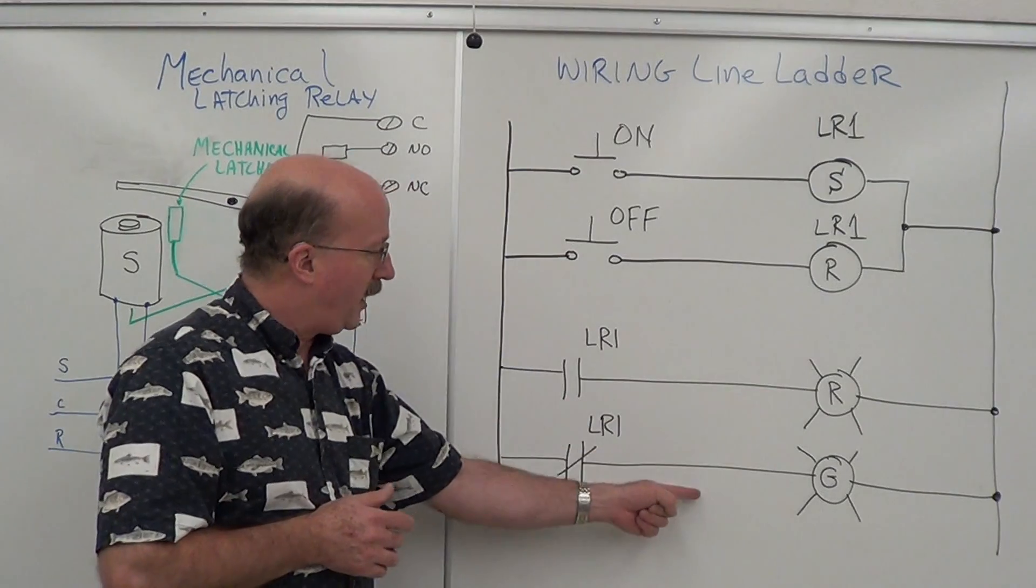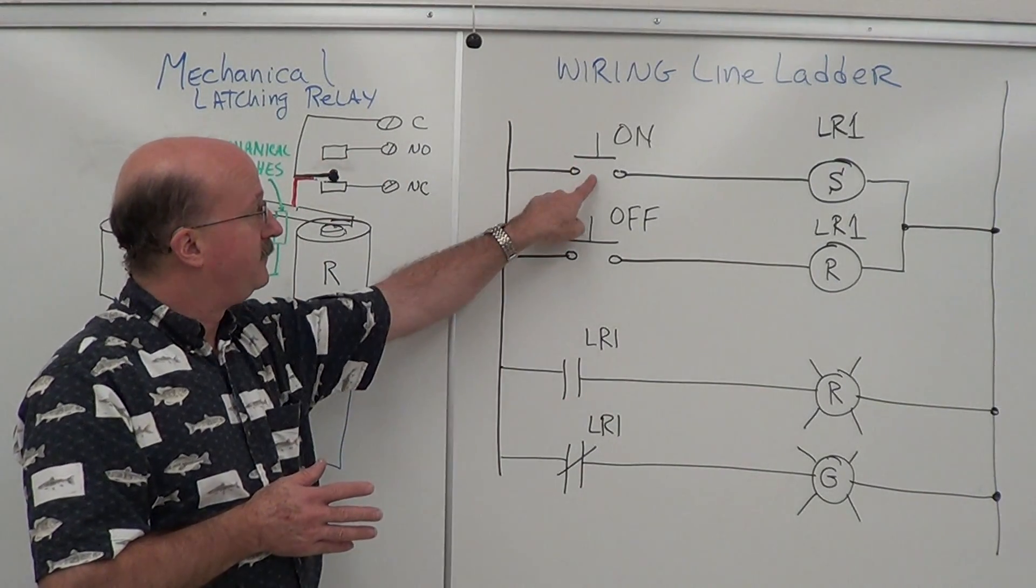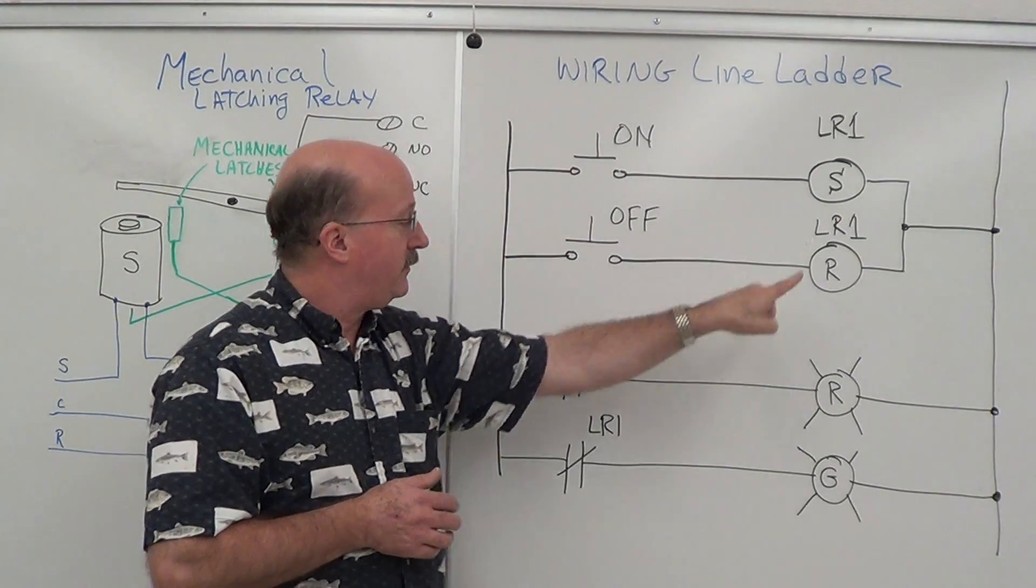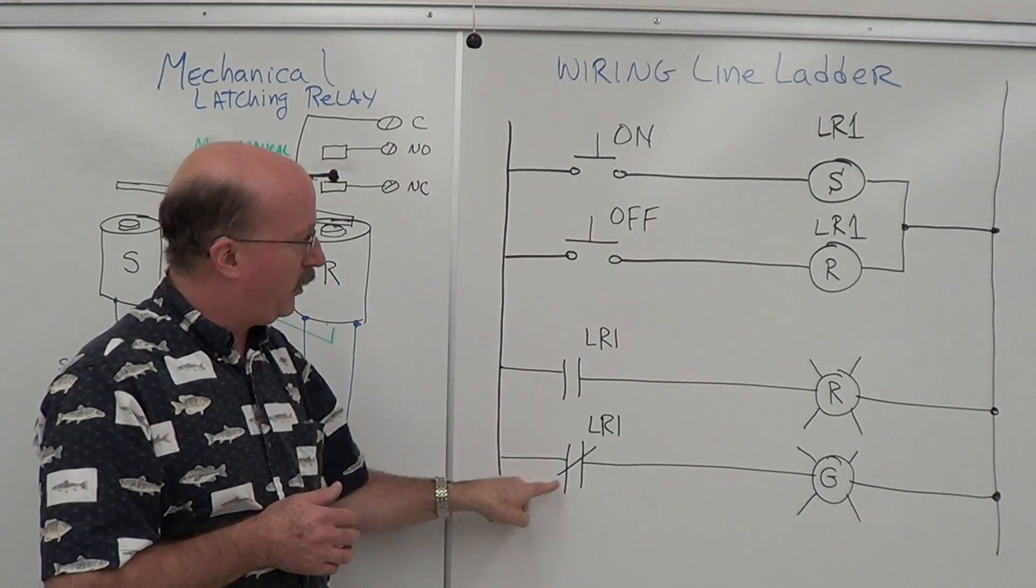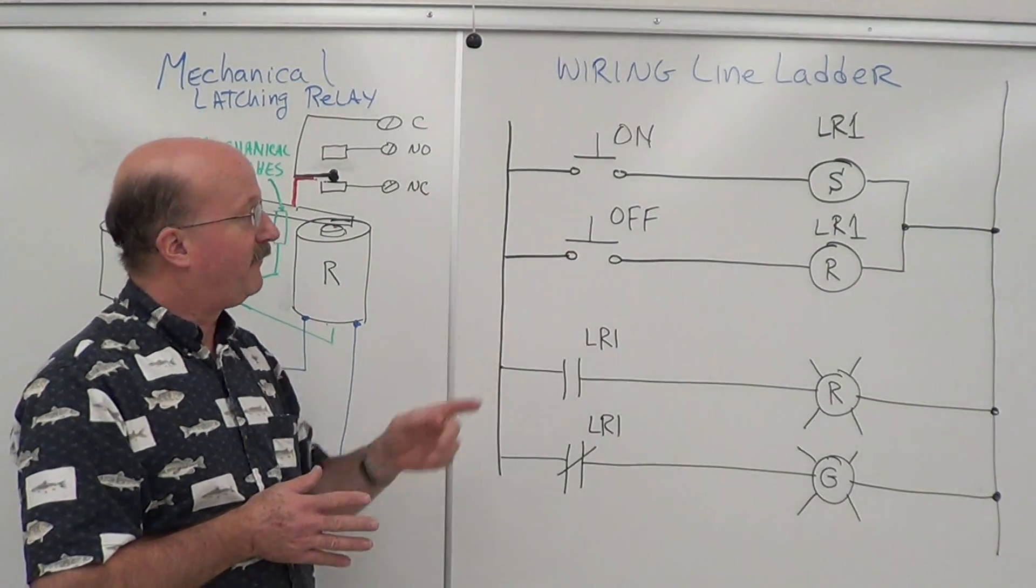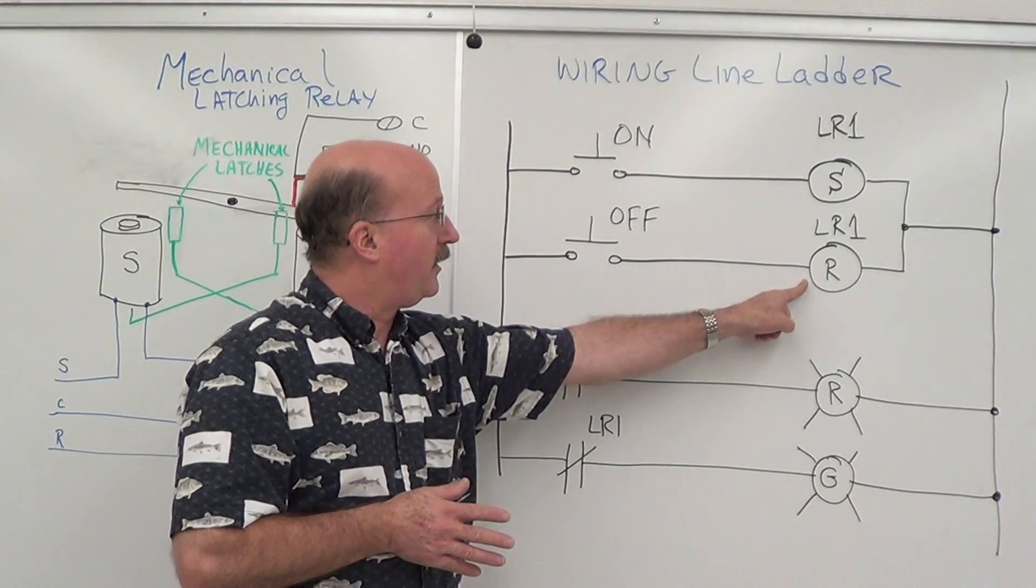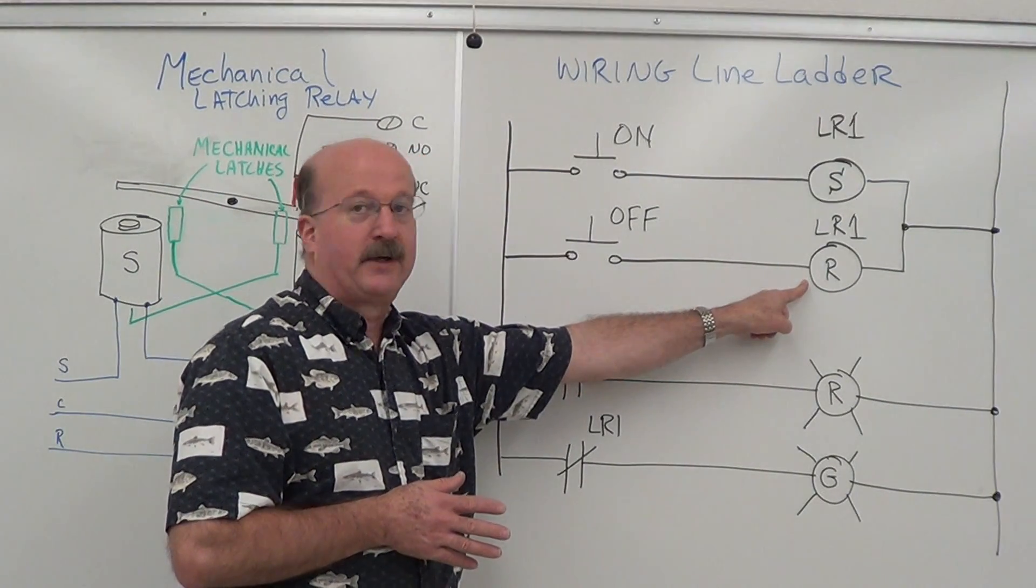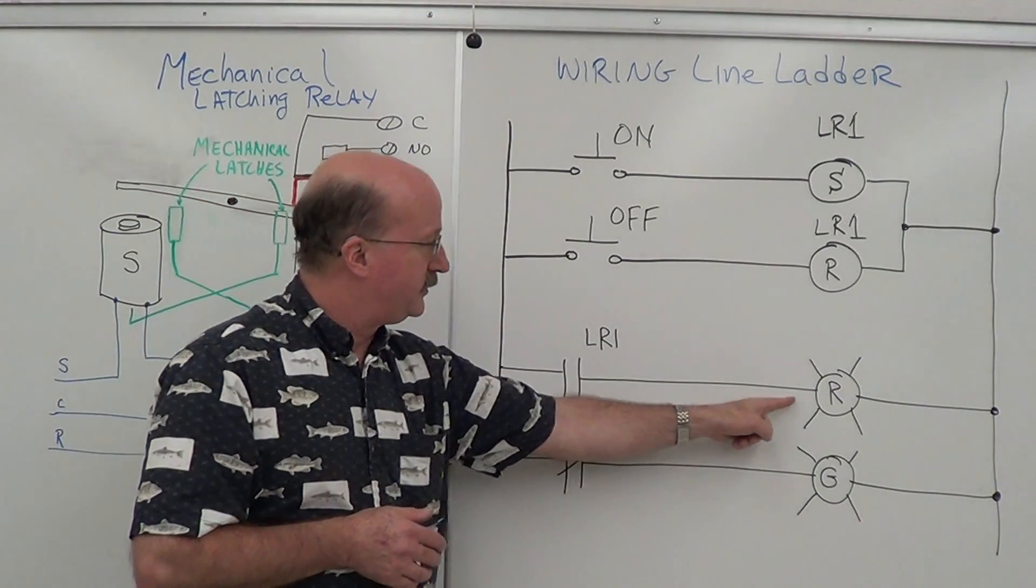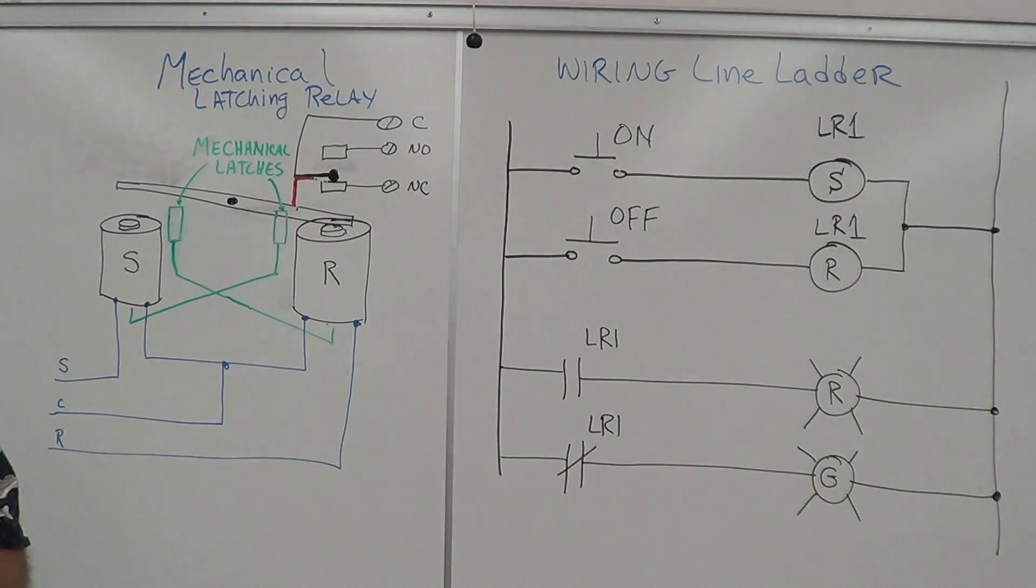So if we look at this in the off condition, red light will be off, green light will be on. I push the on button, energizes the set or the on coil. This will close, that will open. Red light on, green light off. Push the off button, energize this coil, latches release, mechanical movement moves. This opens up, that closes. Red off, green on.